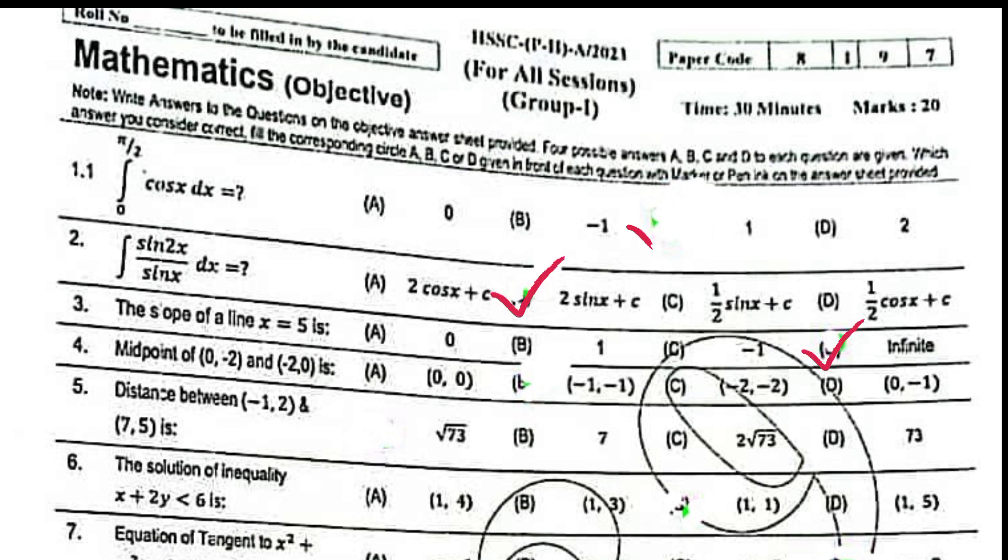Midpoint of 0, minus 2 and minus 2, 0 is minus 1, minus 1. Distance between minus 1, 2 and 7, 5 is under root 73.